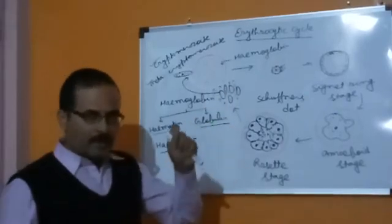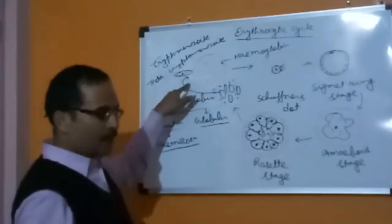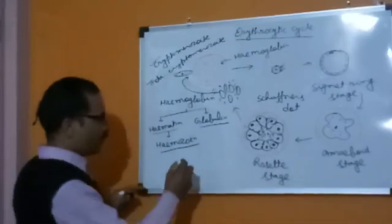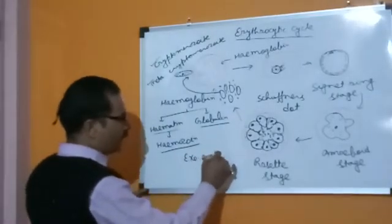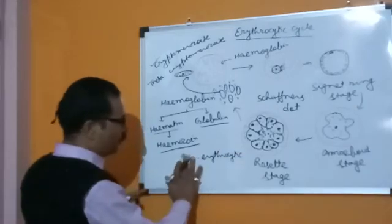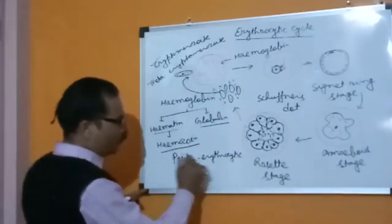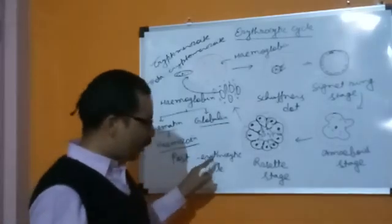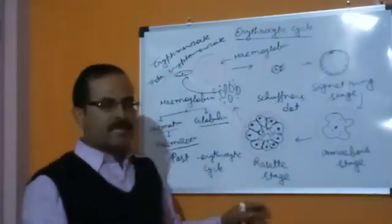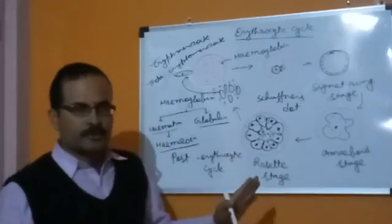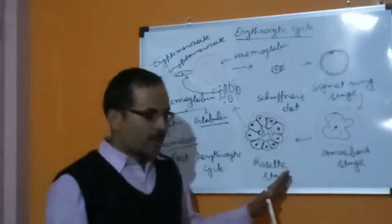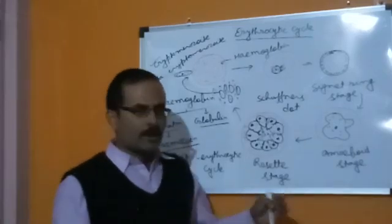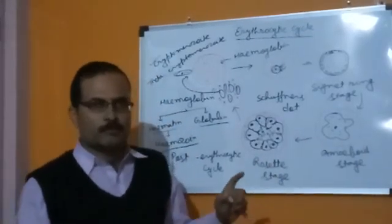After release, the merozoites may infect fresh RBCs and continue the erythrocytic cycle. Or some merozoites may go to infect fresh liver cells — this forms the post-erythrocytic cycle, where the phenomenon is the same as the pre-erythrocytic cycle. This completes the asexual reproduction of Plasmodium. The next video will cover the sexual reproduction of Plasmodium.